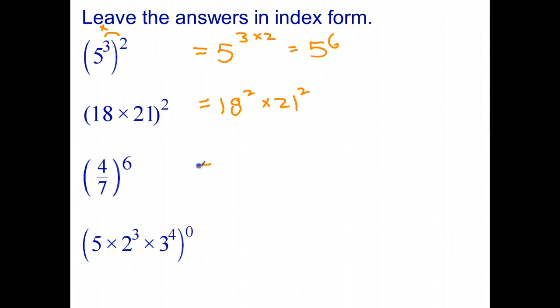The third question, we've got all of 4 divides 7 to the power of 6. We can write that without brackets by putting 4 to the power of 6 over 7 to the power of 6.